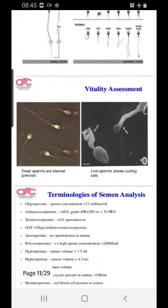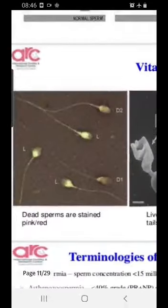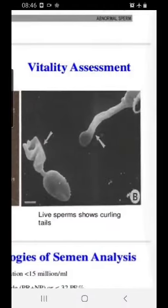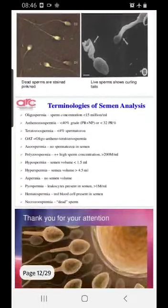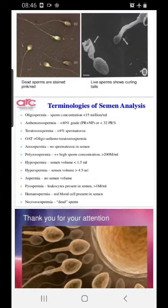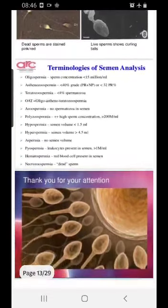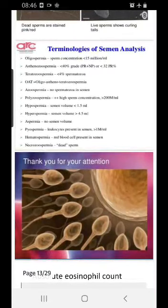Vitality assesses how many sperms are motile and able to swim. On the left side you can see dead sperms — when you stain them, if they take up the color they are dead; if they do not, they are alive. This vitality assessment is important to determine how many sperms are actually vital and able to fertilize the egg.